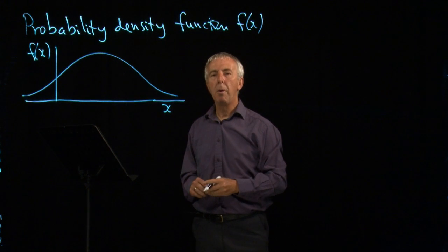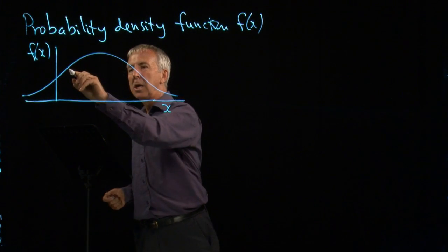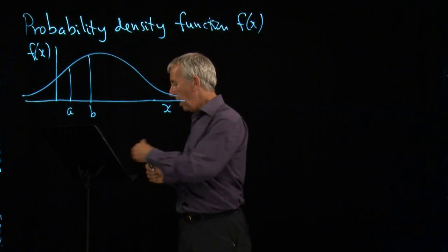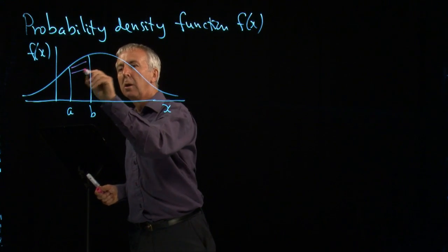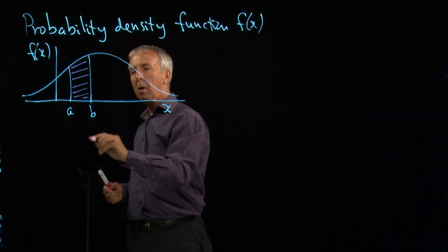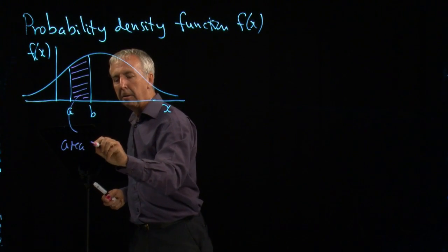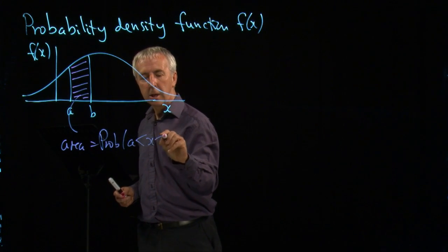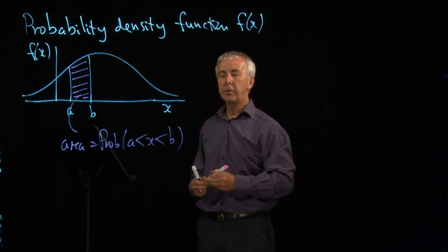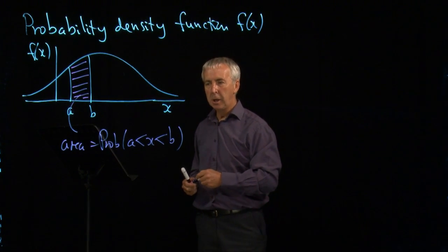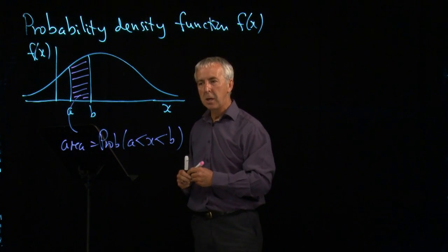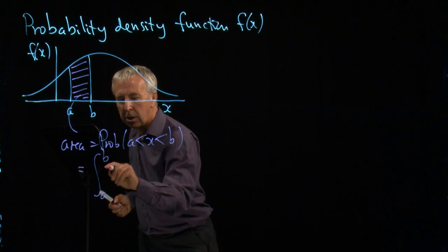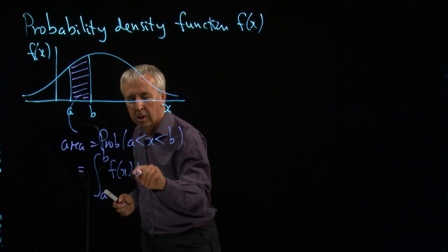And we work out probabilities now by saying that the probability of getting x between a and b is given by the area between those lines and under the graph. So this area is the probability that a is less than x is less than b. In other words, that x is in between a and b. And of course, a common way of working out areas is to use integration. So this would be the integral from a to b of f(x)dx.